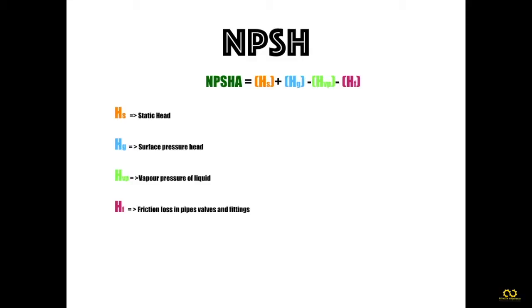To calculate NPSHA, we use the formula: NPSHA equals the summation of static head Hs and surface pressure head Hg, minus the vapor pressure of the liquid Hvp and friction loss in pipes, valves and fittings Hf. This applies to the suction line of the centrifugal pump.